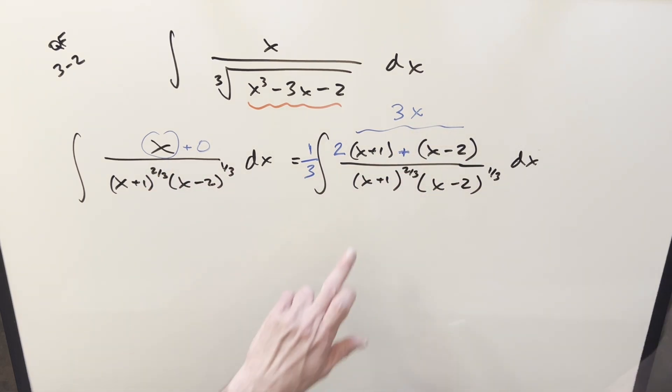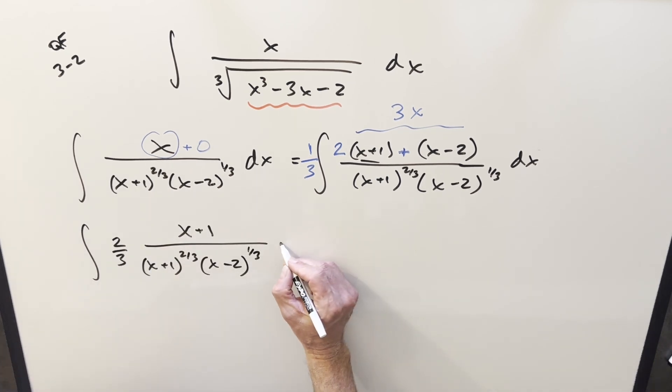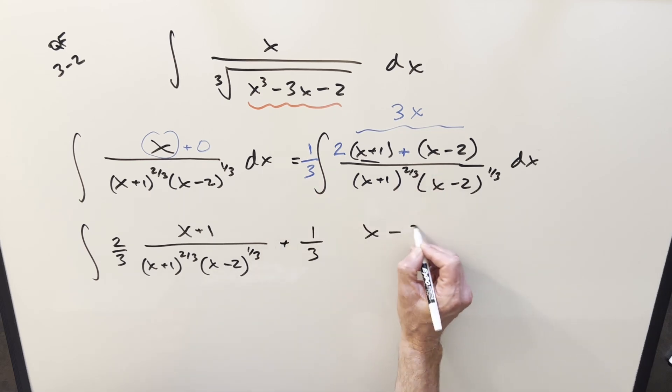Then 1 third times 3x, we just get our x. We haven't changed it, but now we have something we can split up into two fractions. So what's going to happen now, I'll distribute the 1 third back in. So like the first piece is going to be 2 thirds, we have our x plus 1 over this denominator. And then for the next piece, I'm going to keep it all in one integral, distribute in the 1 third. So we'll have 1 third in front, x minus 2 over the same denominator again.